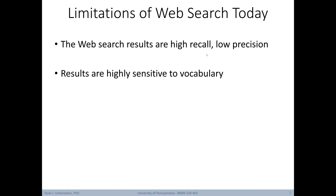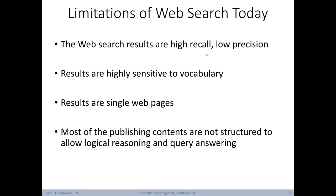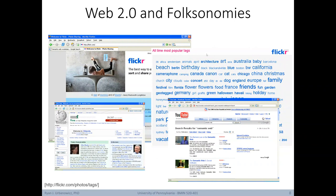Also, the results of a web search are highly sensitive to the vocabulary used. Additionally, results typically come in the form of a single web page. Further, most published contents are not structured to allow any form of logical reasoning or query answering. However, there are signs the web is developing into something more useful. One such step is the inclusion of folksonomies — through crowdsourcing, individuals are beginning to tag entities on the web, including pictures, videos, discussions, and papers, to make them easier to find and access.